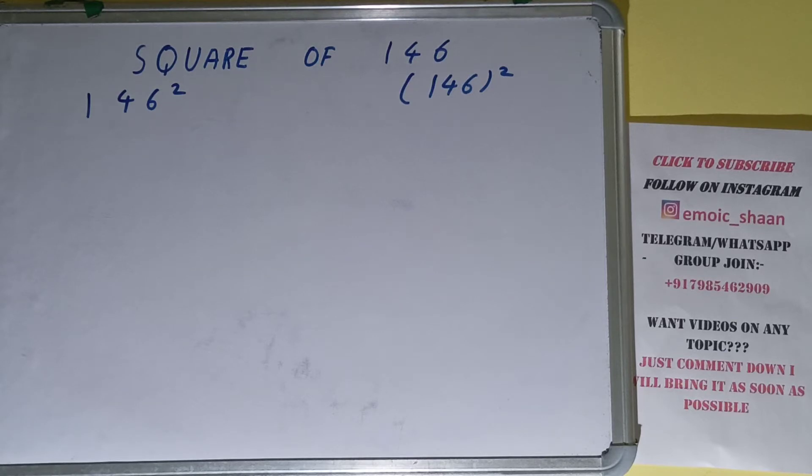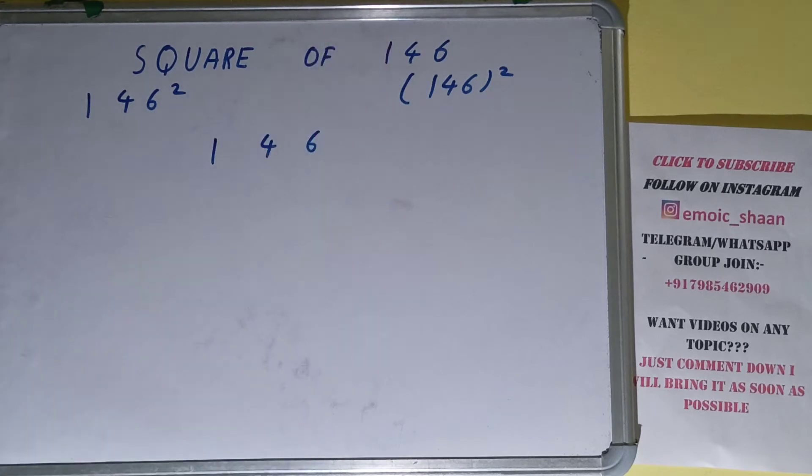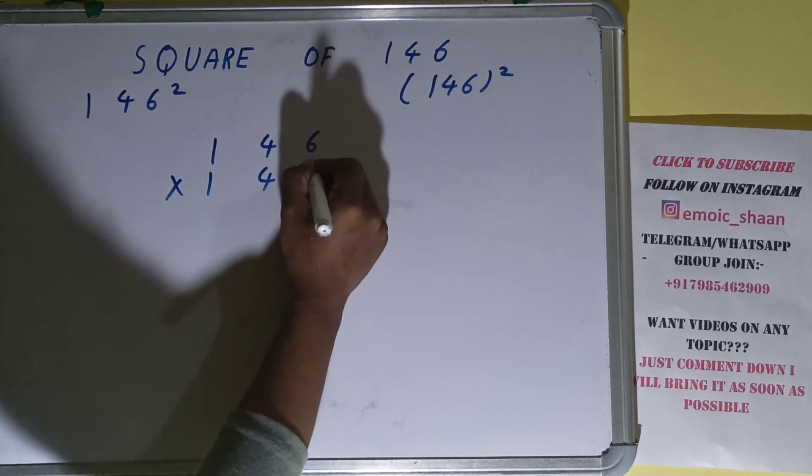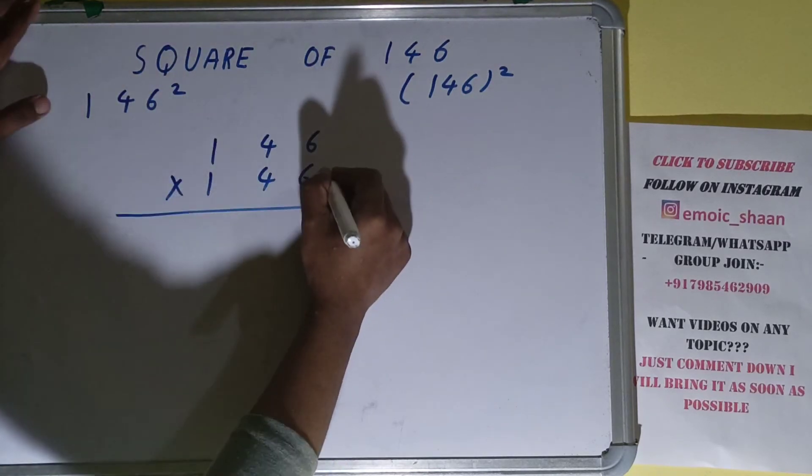number by itself. The number over here is 146. To find the square of it, we need to multiply it by itself - that is 146 - and do the normal multiplication. So let's begin with the